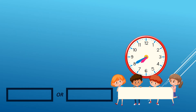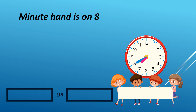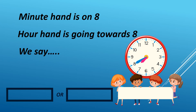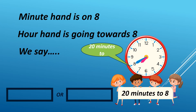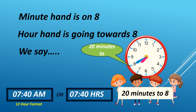When the minute hand is on 8 and the hour hand is going towards 8, we say 20 minutes to 8. It can either be AM or PM. For example, it is 7:40 AM in 12-hour format. We read it as 740 hours in 24-hour format.